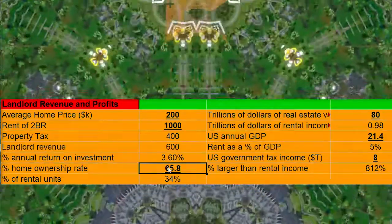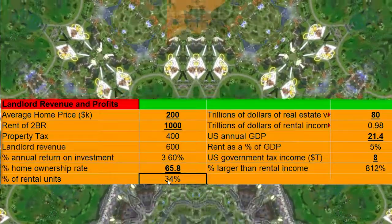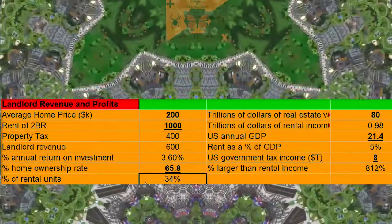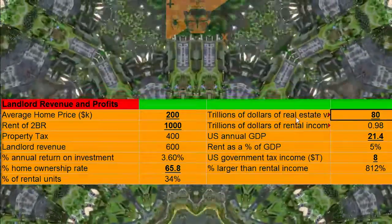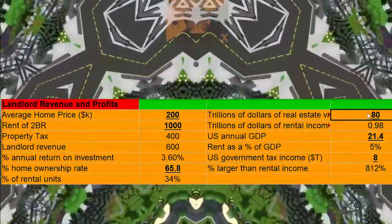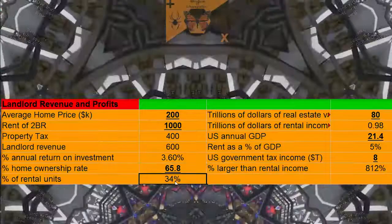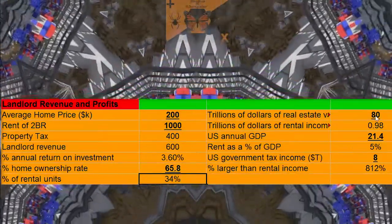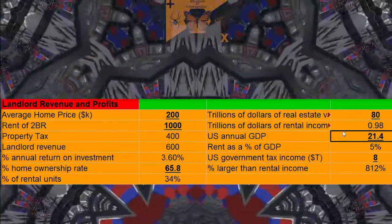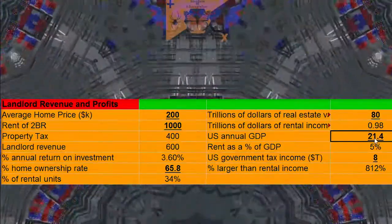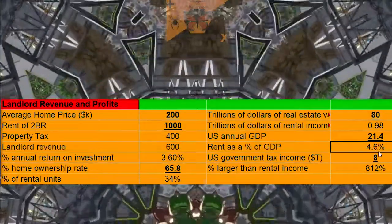Our home ownership rate — this is taken off the internet — is 65%, meaning there are 34% rental units in America. This is the total amount of real estate asset value: $80 trillion. You just take 3.6% times 34%, because we only want the rental units, times $80 trillion, and you get about $1 trillion. The U.S. annual GDP is $21 trillion, so you do the math, and that is 4.6% of GDP.